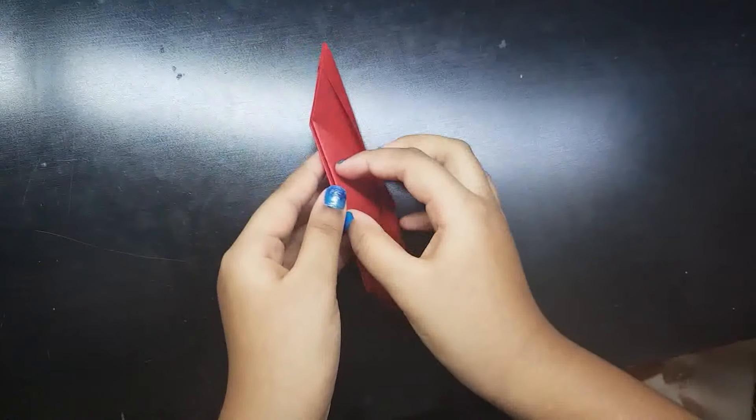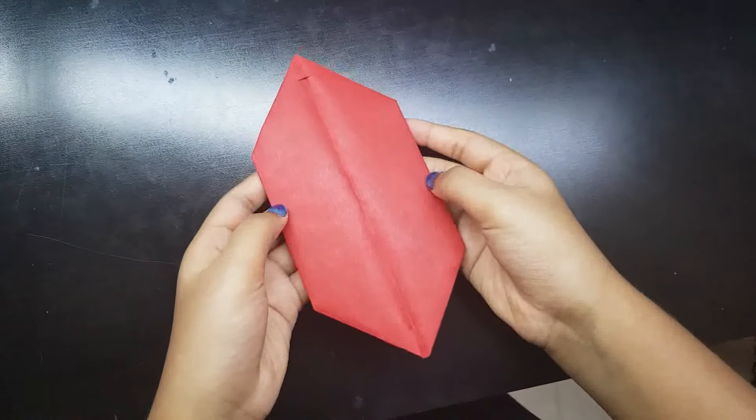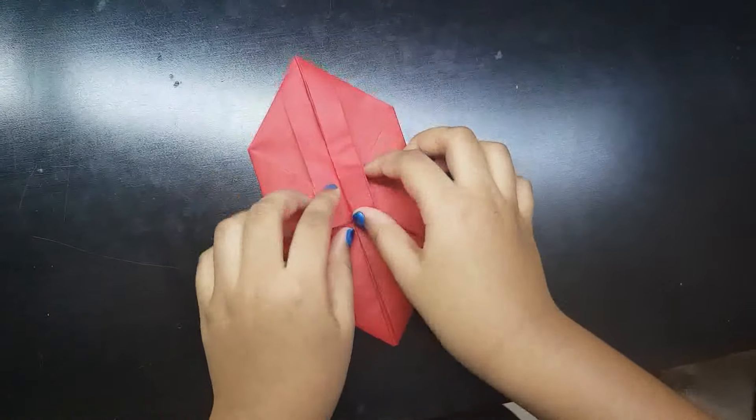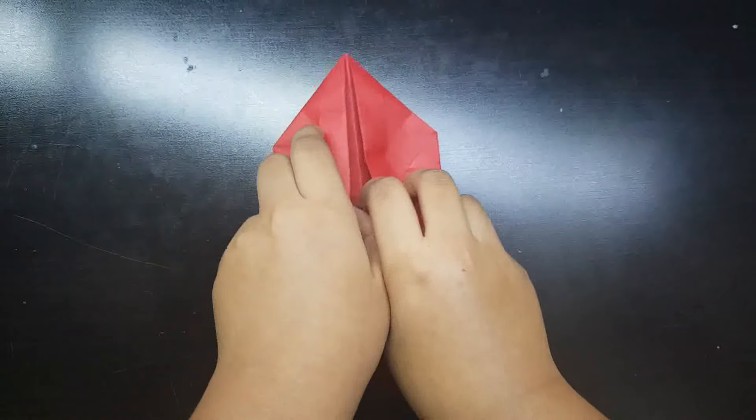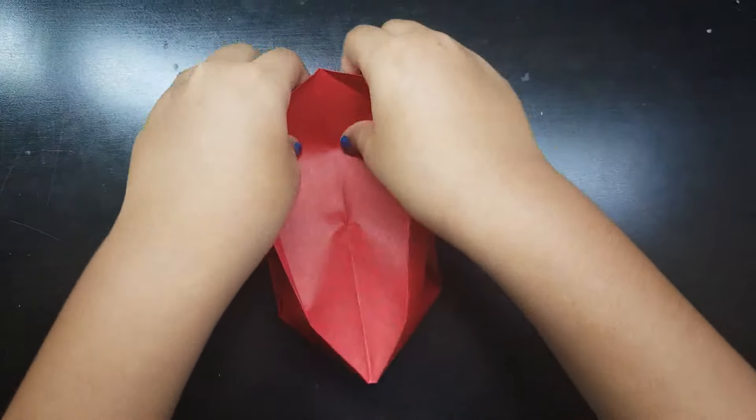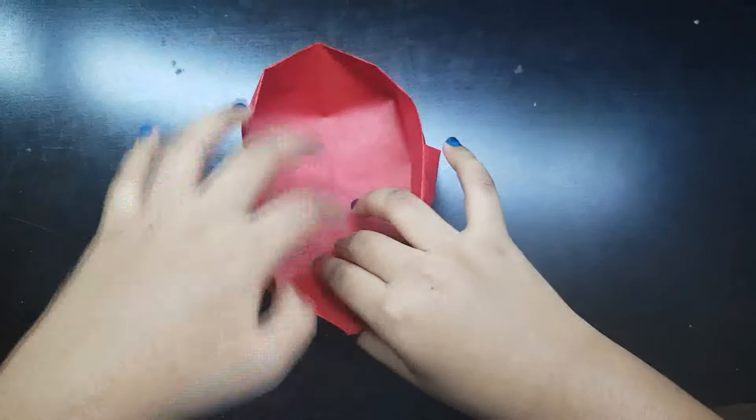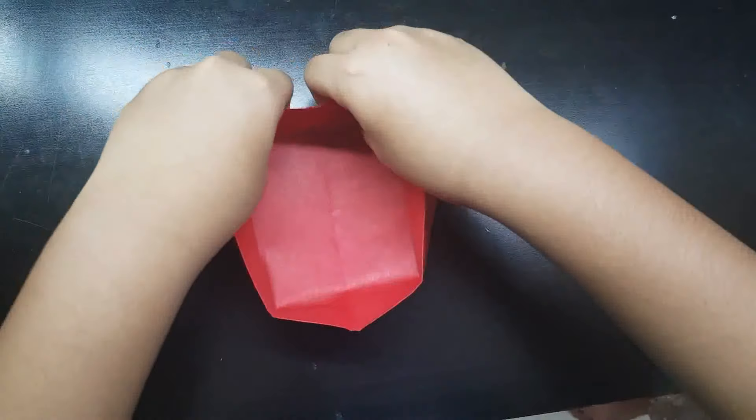Now turn the model and open the box like this. Crease it well on all four corners to get the exact shape.